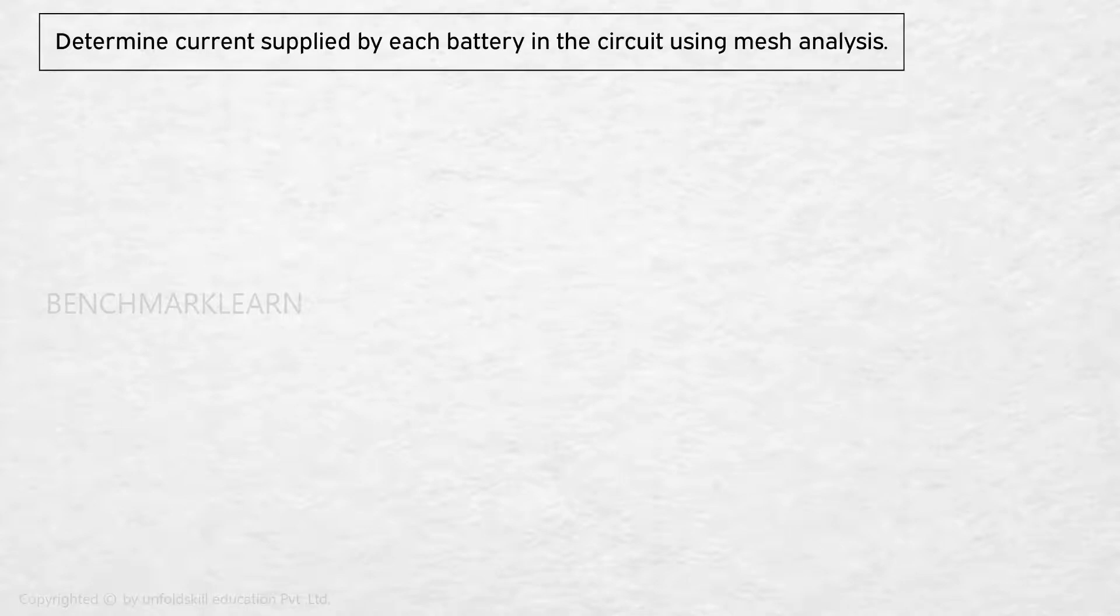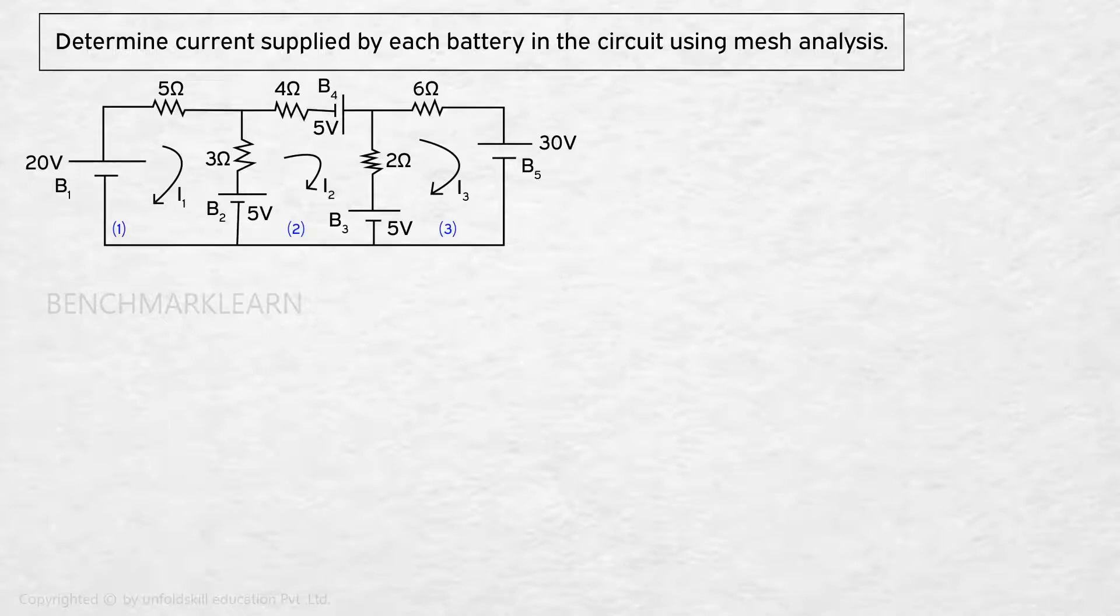Determine current supplied by each battery in the circuit using mesh analysis. Here we have three meshes. The mesh currents are I1, I2 and I3.